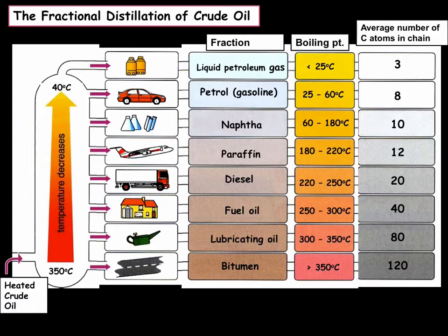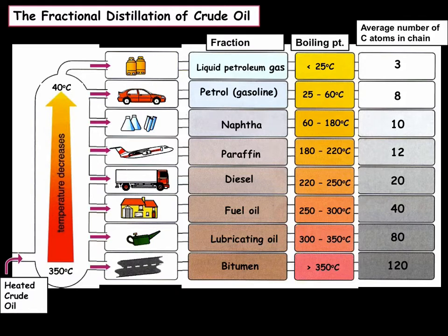Here is a more detailed diagram showing the different fractions. At the bottom, we have the residue or bitumen, which is used for roads, and it boils at a very high temperature so it is the first to condense — it is also the longest chain. Moving up, we have lubricating oil, fuel oil, and diesel, which is used for trucks. Then we have paraffin, also known as kerosene, used for airplane fuel. Then naphtha, used in the chemical industry. Then petrol or gasoline, used for cars. And finally at the top, we have LPG — liquefied petroleum gas — which is mainly propane and butane, used for cooking gas such as in barbecues. It is still a gas at room temperature and so it leaves the column right at the top.